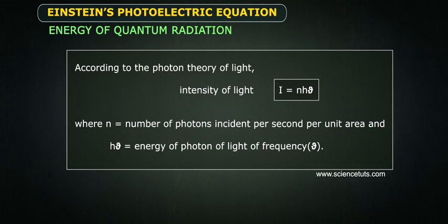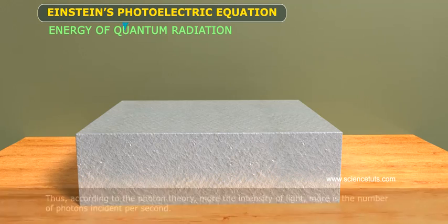Where n equals number of photons incident per second per unit area and hν equals energy of photon of light of frequency ν. Thus.